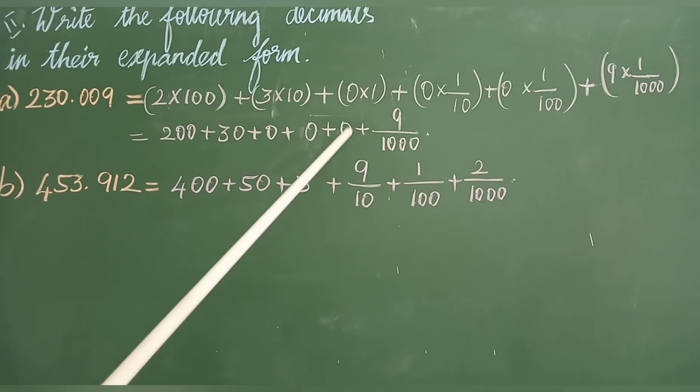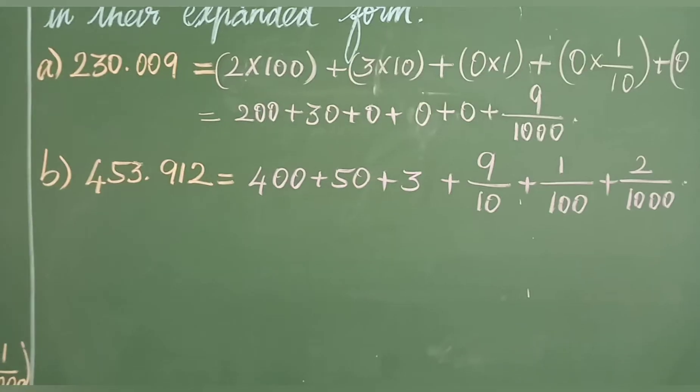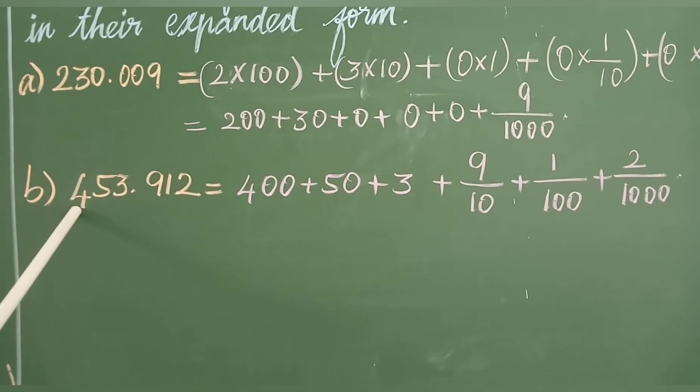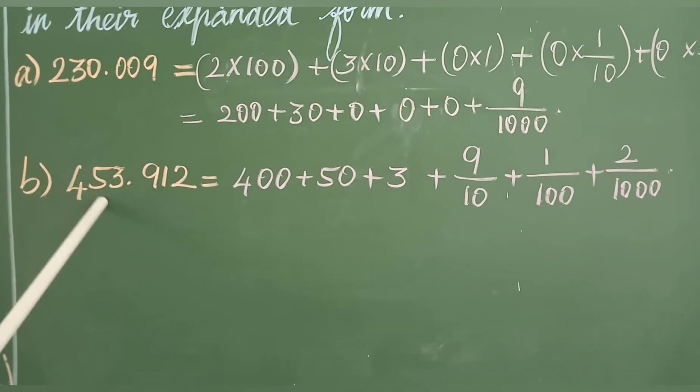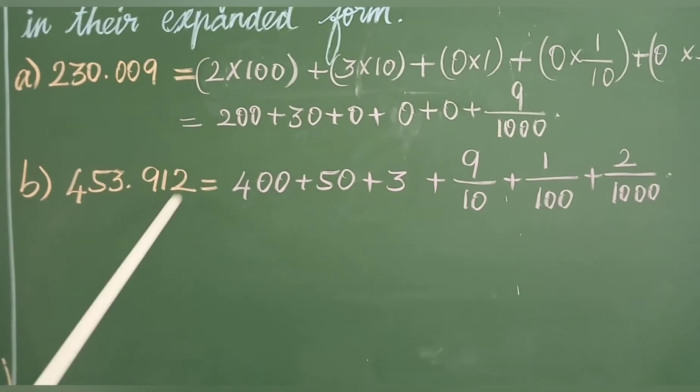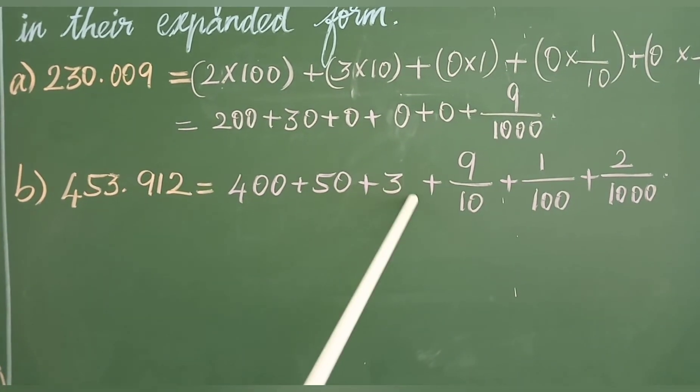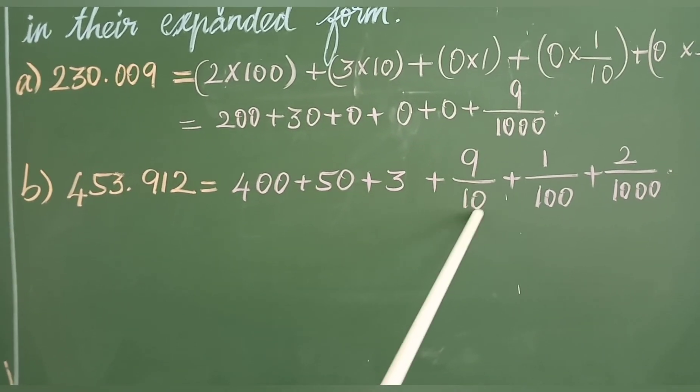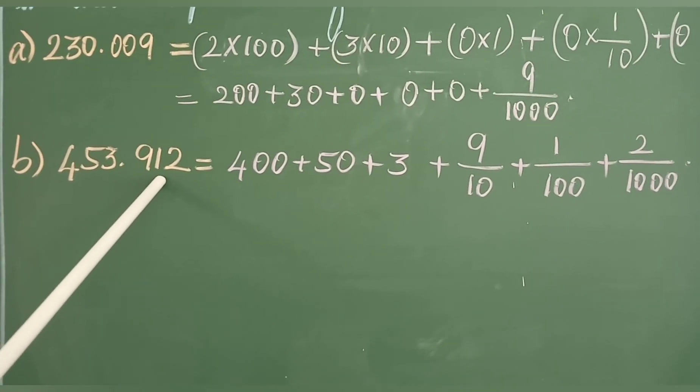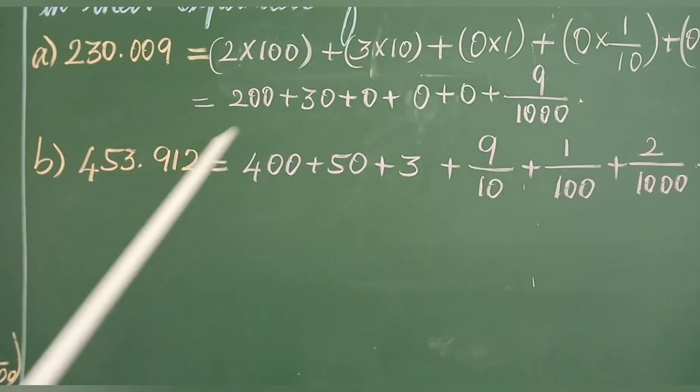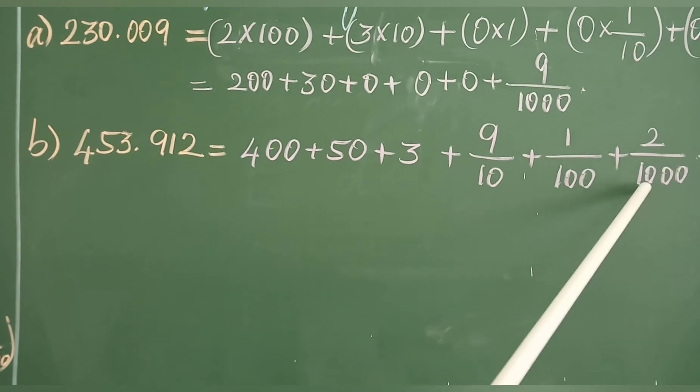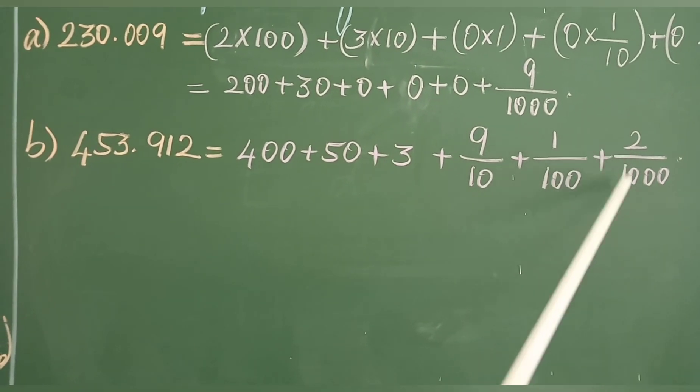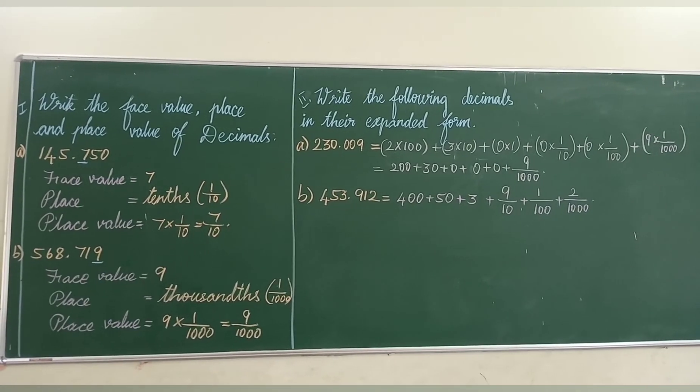Next: 453.912. 4 into 100, plus 5 into 10, plus 3 into 1, plus 9 into 1 by 10 equals 9 by 10, plus 1 into 1 by 100 equals 1 by 100, plus 2 into 1 by 1000 equals 2 by 1000. So the answer is 400 plus 50 plus 3 plus 9 by 10 plus 1 by 100 plus 2 by 1000. My dear students, write this in your pamphlet with neat handwriting. Thank you.